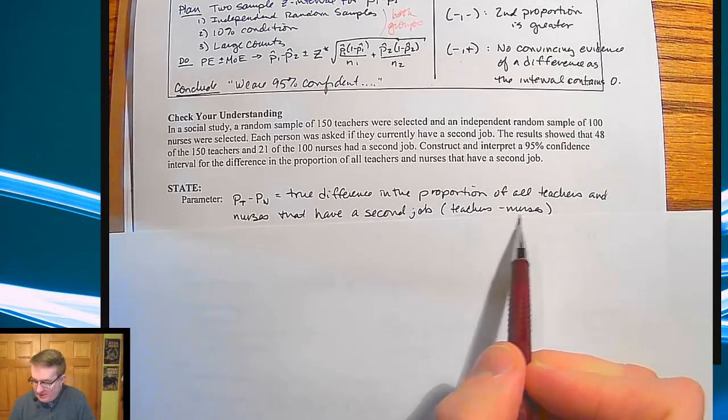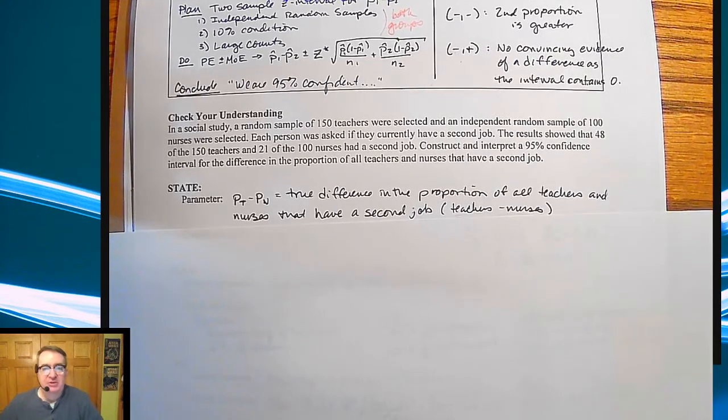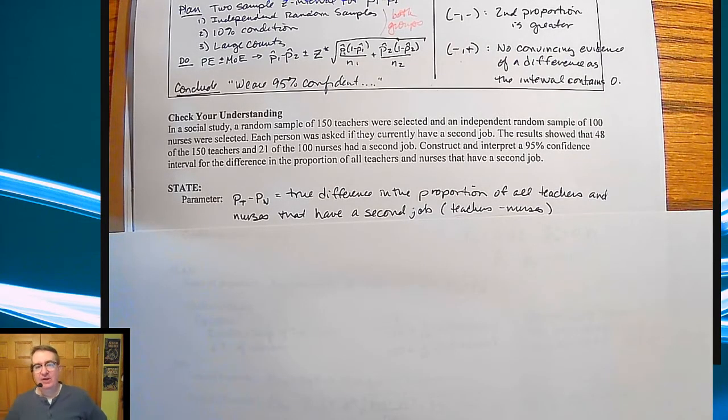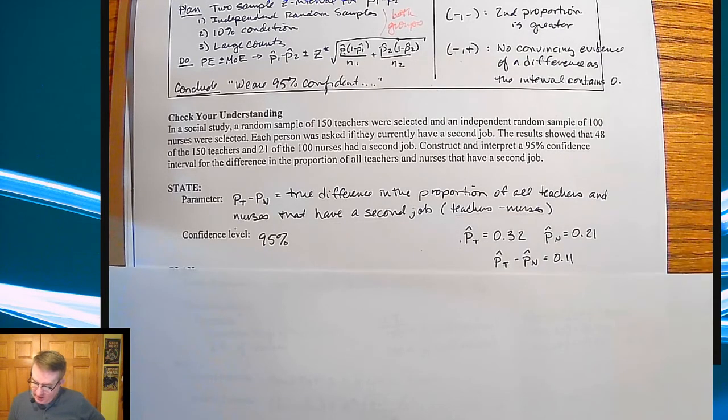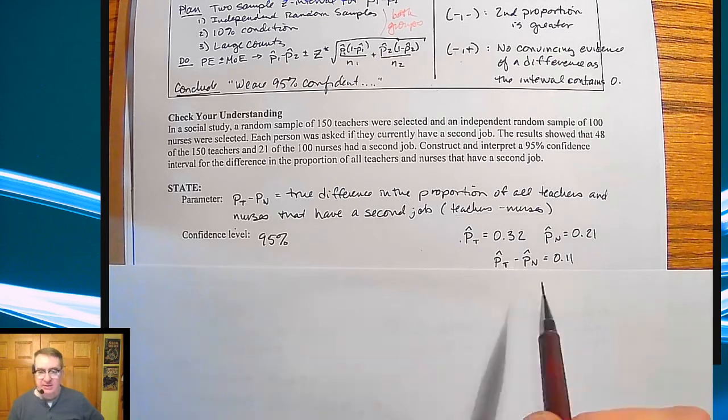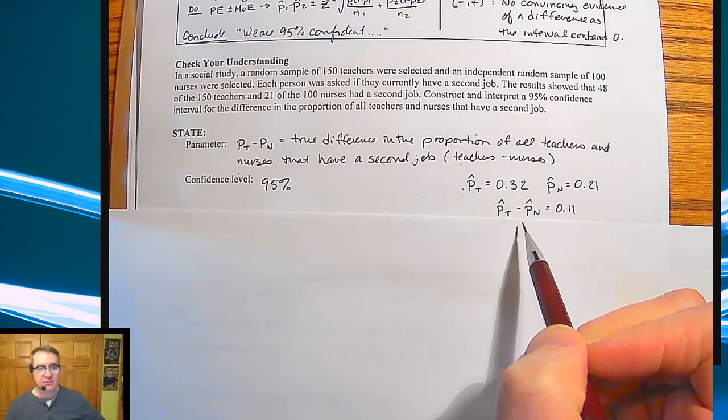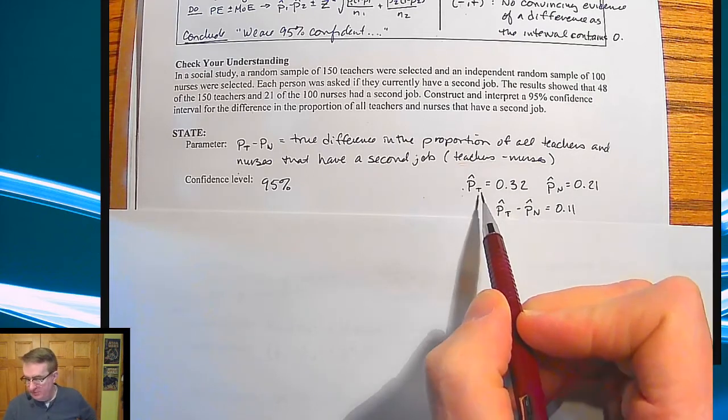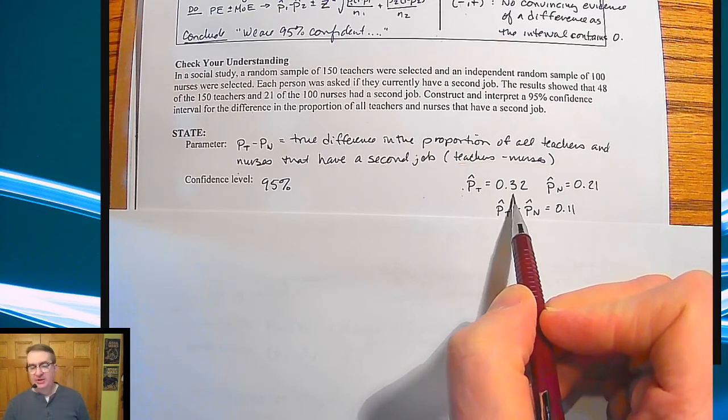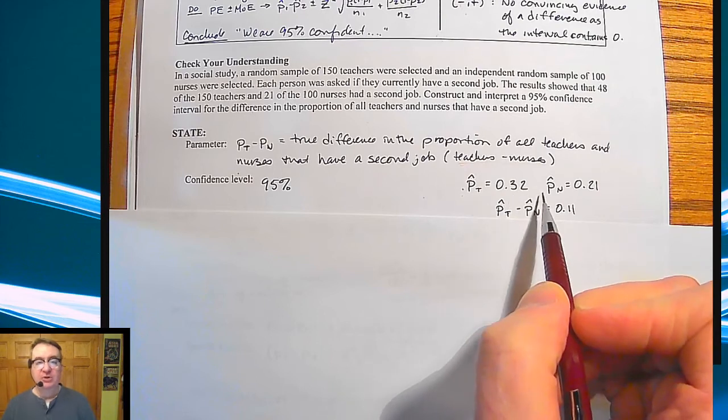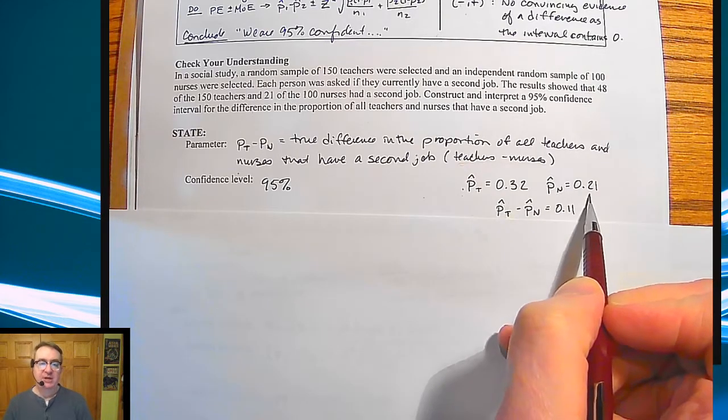Notice we have context. And then back over here, we have this nice little teachers minus nurses. So we can have in the back of our head exactly what is going on. And our confidence level over here is going to be 95%. This is also a good place to put out what your proportions are so that they're spelled out clearly.